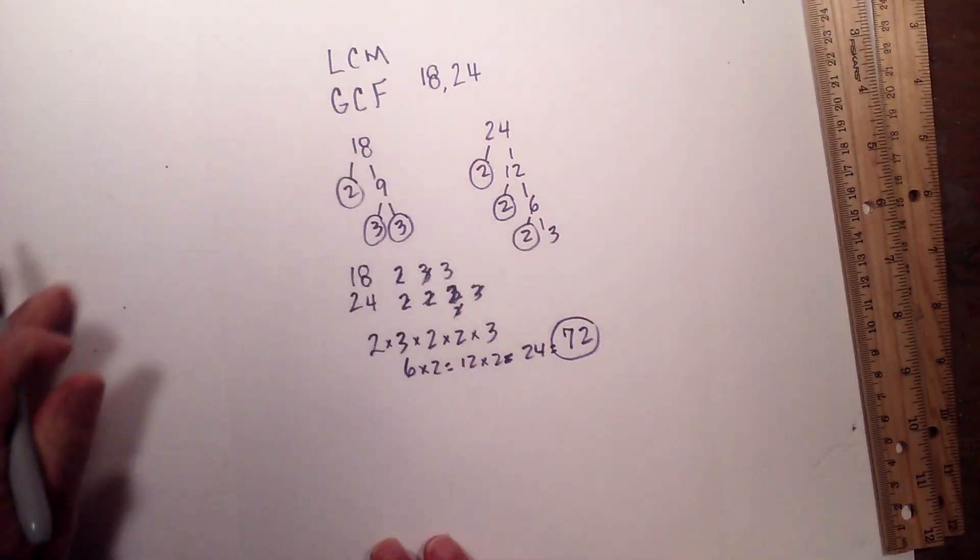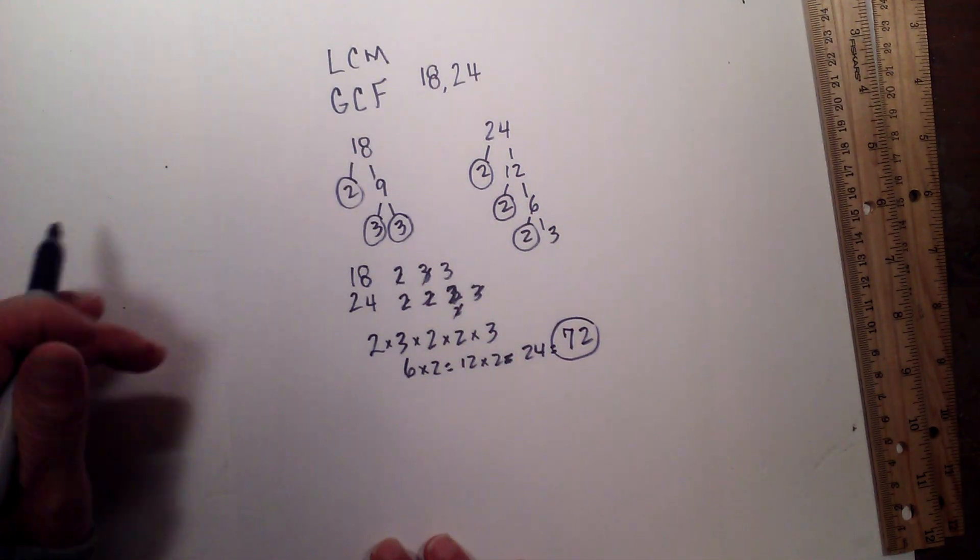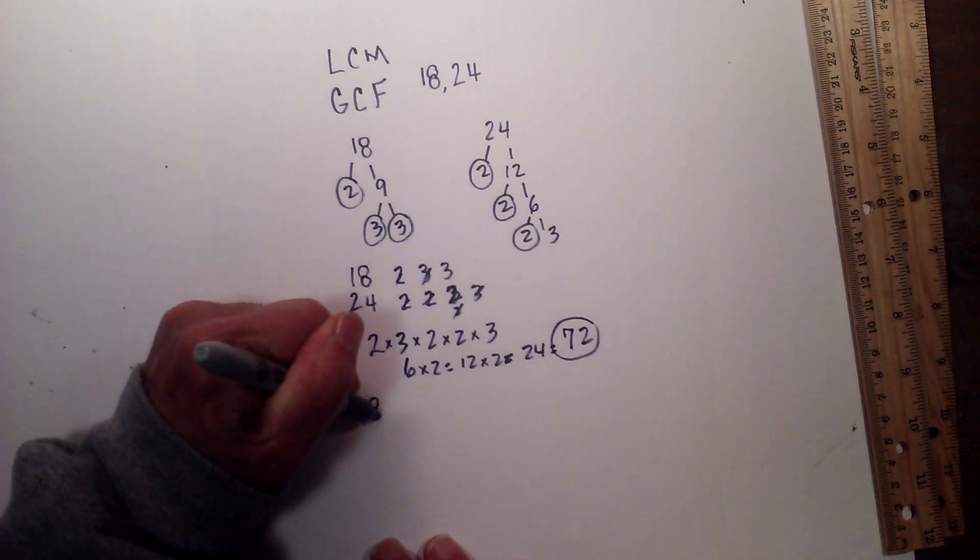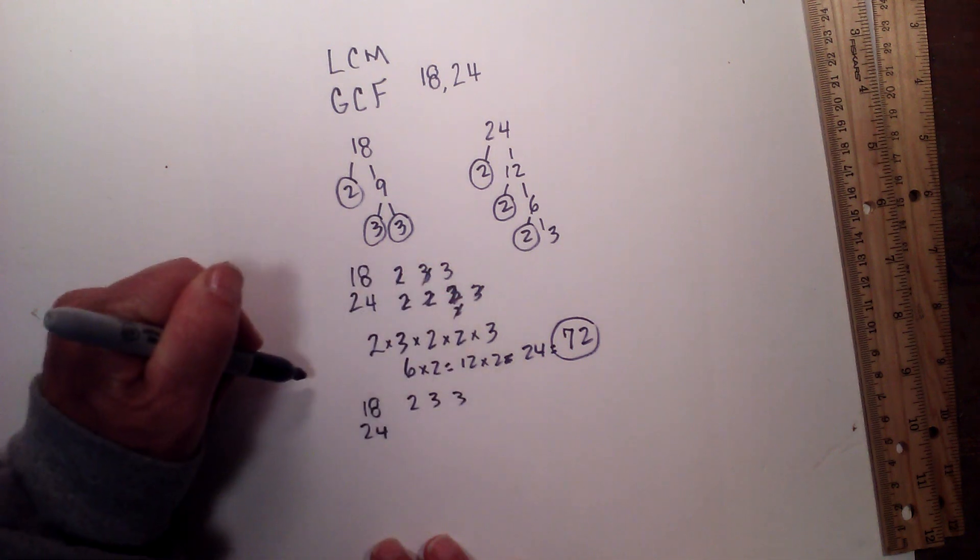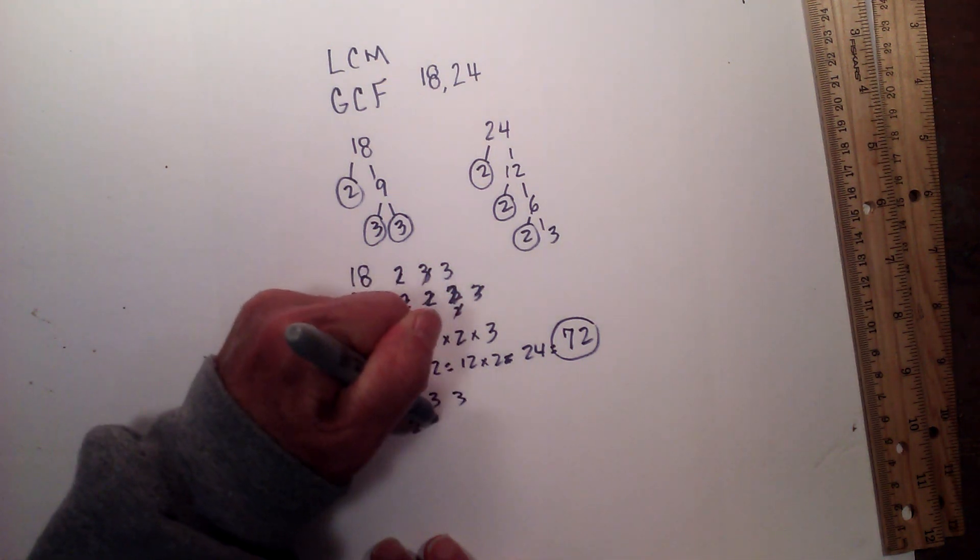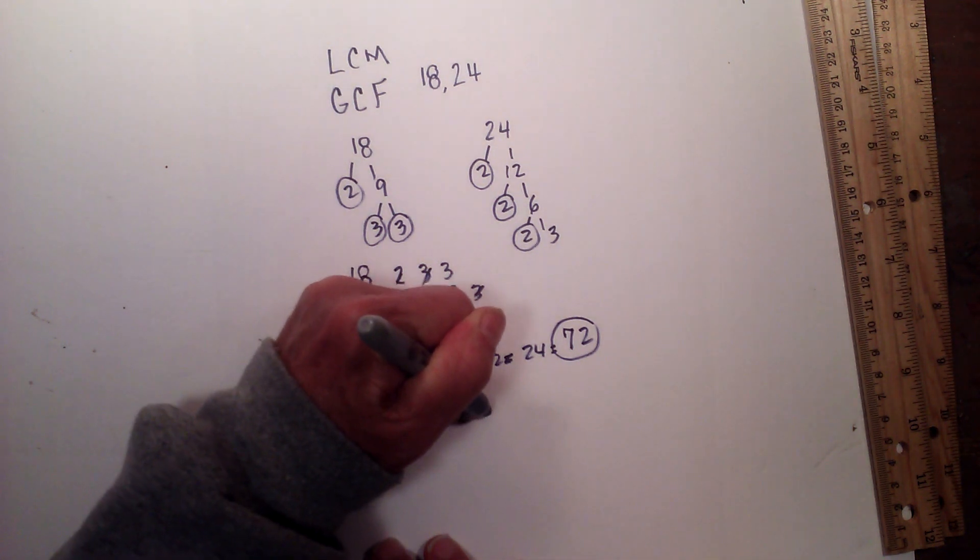Now let's find the greatest common factor. So all we do is, I'm going to rewrite the numbers. We have 2, 3, 3 for 18, and then we have 2, 2, 2, and 3 for 24.